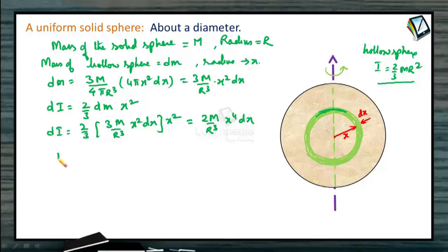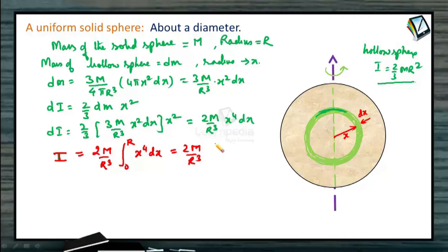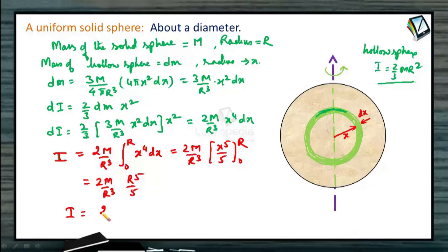Substituting dm, we get dI = (2M / R³) x⁴ dx. Integrating from 0 to R: I = (2M / R³) × [x⁵/5] from 0 to R = (2M / R³) × (R⁵/5). This gives moment of inertia I = (2/5) M R². So the moment of inertia of a solid sphere is (2/5) MR², whereas for a hollow sphere it is (2/3) MR², both about the diameter.